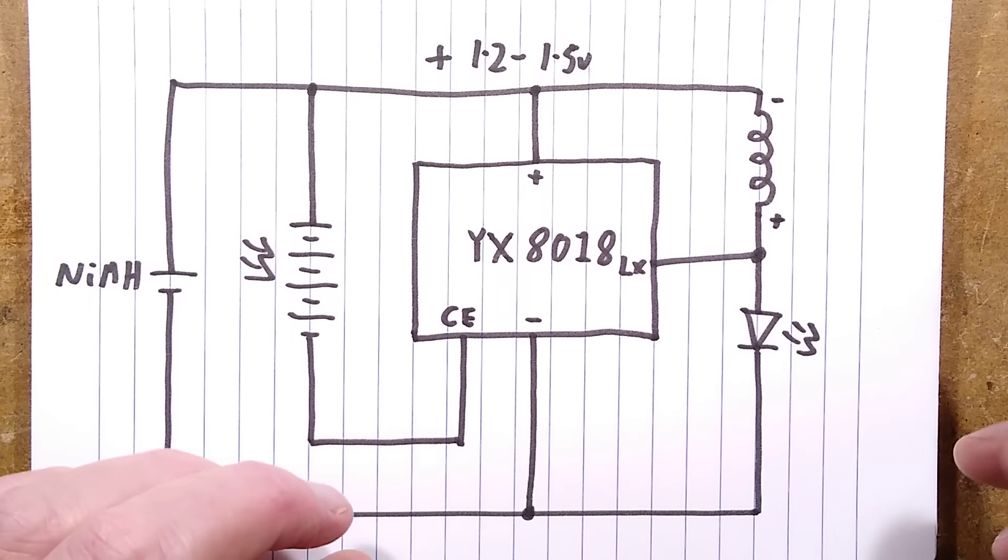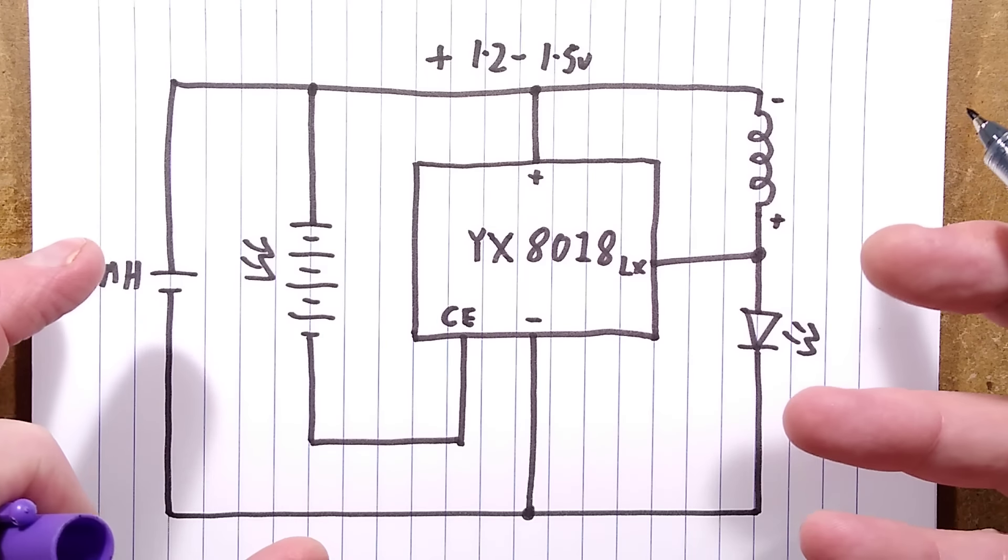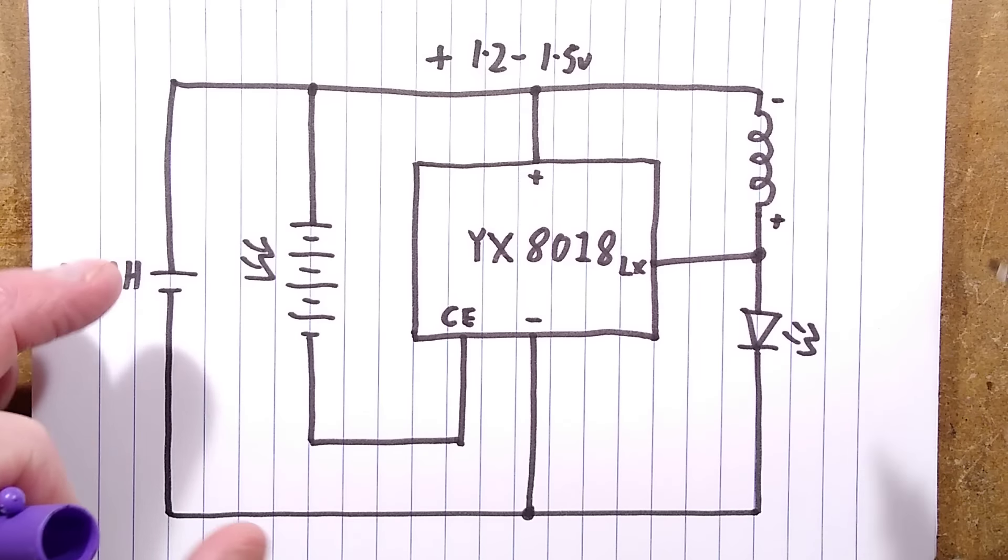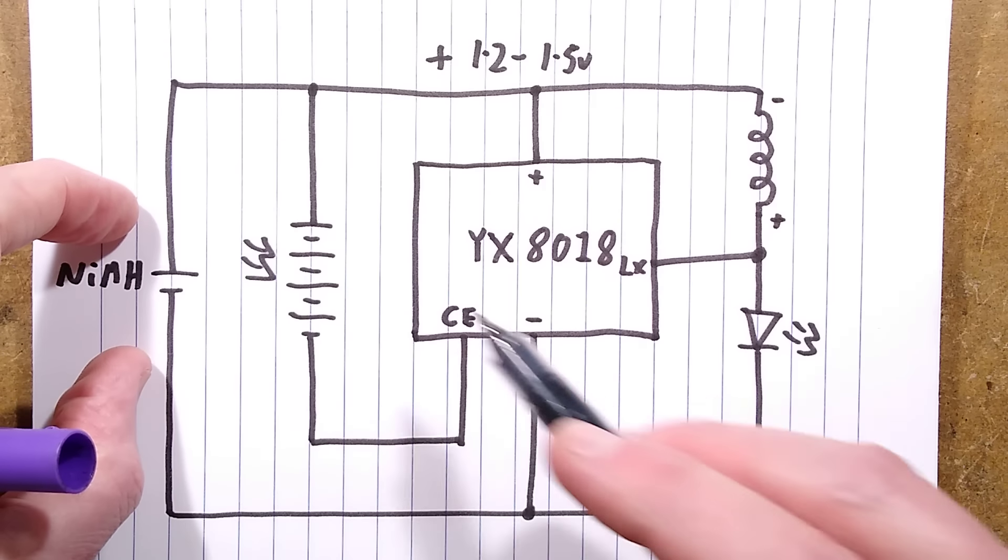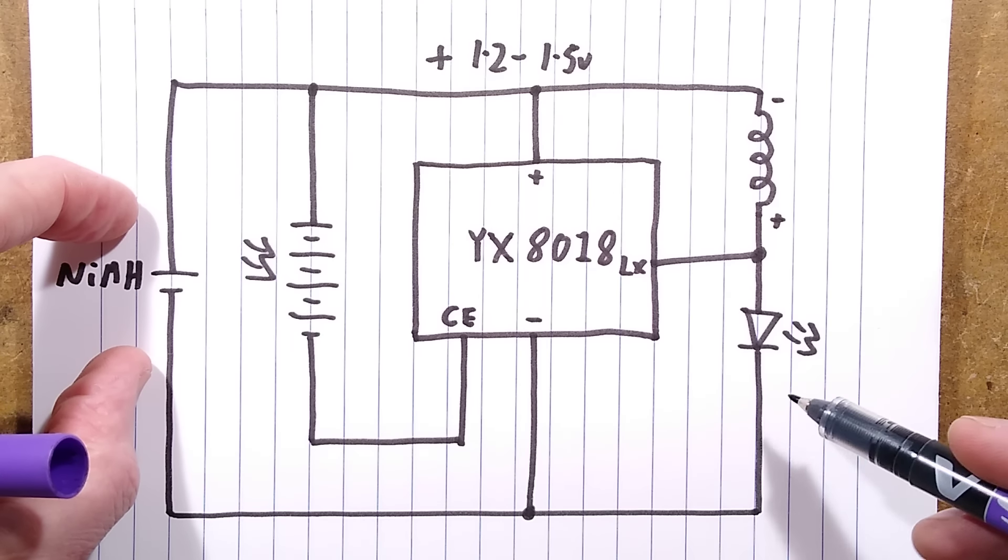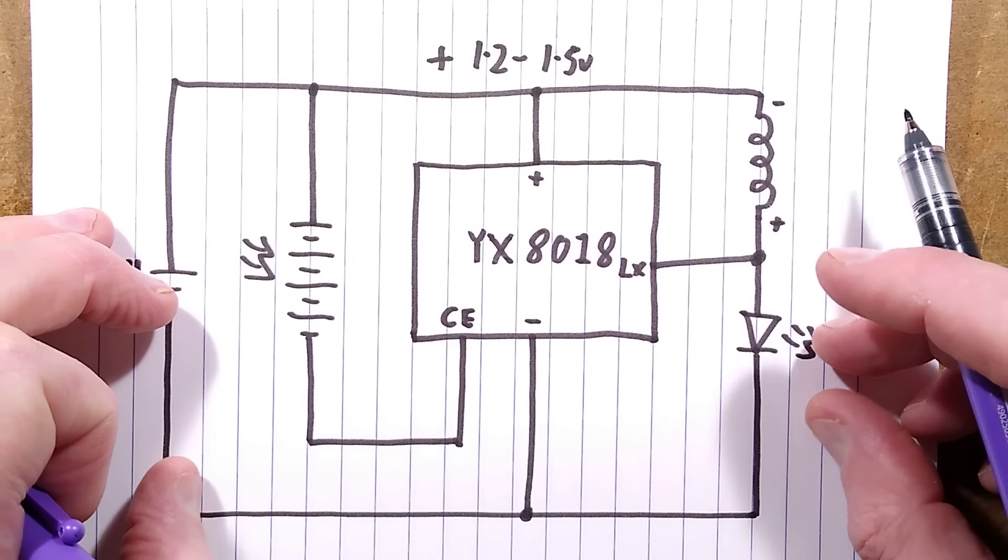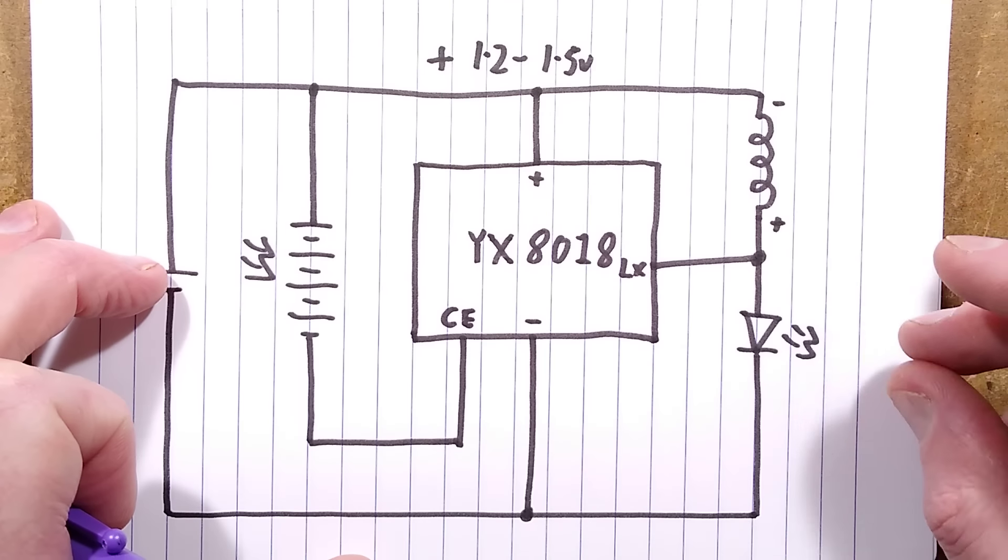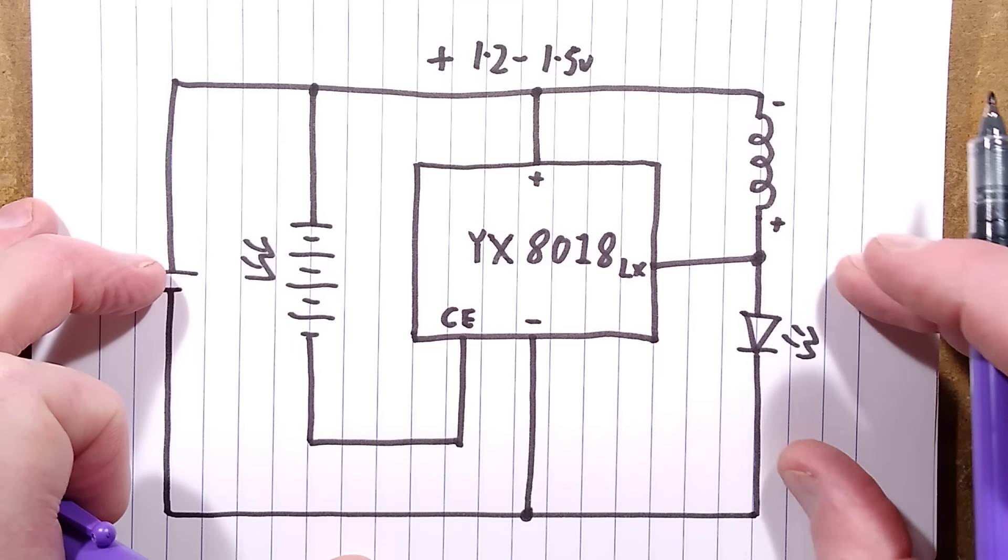But there is a downside to this, because sometimes the LEDs fail with a sort of parasitic resistance. And what can happen then is that the nickel metal hydride cell can't charge, because the current that's coming from the solar panel is basically being shunted by the faulty LED. And this is particularly prevalent when you've got a big string of LEDs run from one of these circuits, because they're all in parallel, and if just one of those LEDs goes down, it kills the whole thing.